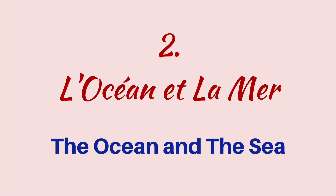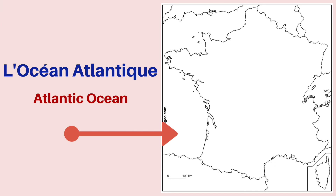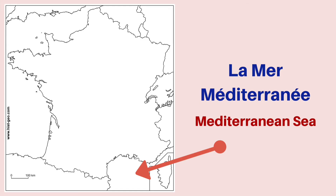Next, we are going to see the neighboring ocean and the sea — l'océan et la mer. Towards the northwest, you have la Manche, which is the English Channel. Towards the west, you have l'Océan Atlantique, which is the Atlantic Ocean. And towards the south, you have la Mer Méditerranée, which is the Mediterranean Sea.